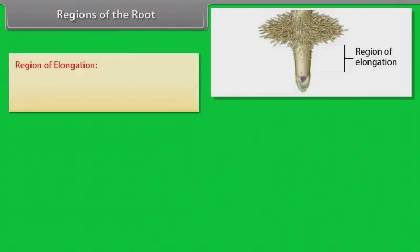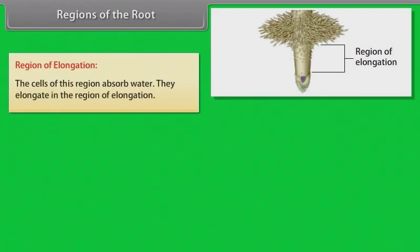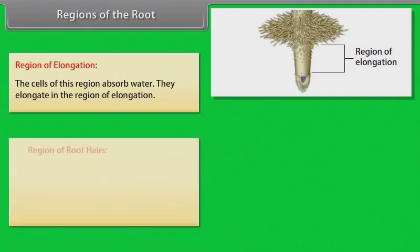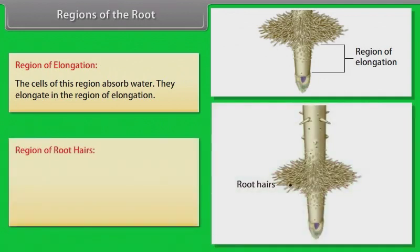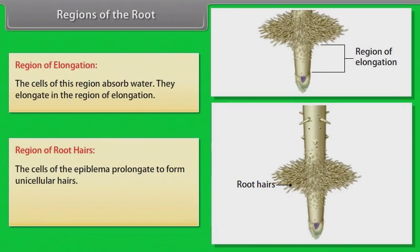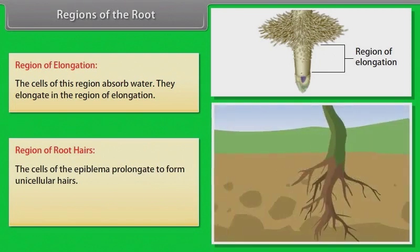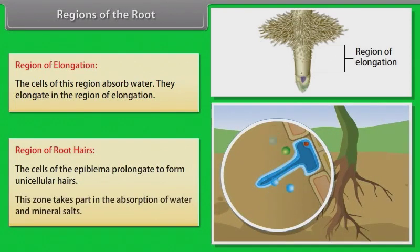Region of elongation: The cells of this region absorb water and elongate. Region of root hairs: The cells of the epiblemma elongate to form unicellular hairs. This zone takes part in the absorption of water and mineral salts.